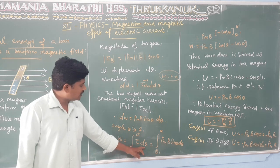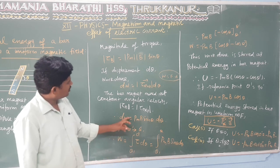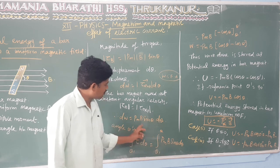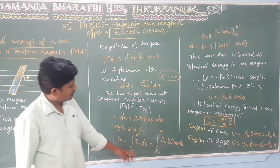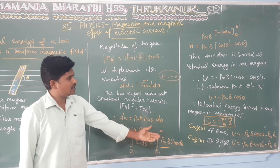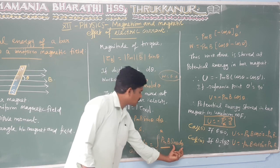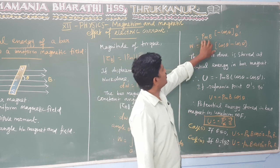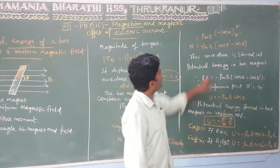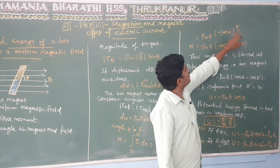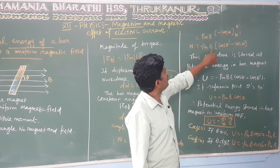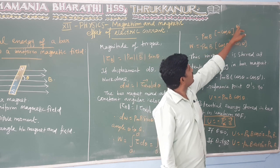We can now compute the total work done by integrating. Substituting PM·B·sin θ dθ — since PM and B are constants — we integrate sin θ dθ, which gives minus cos θ. We substitute the limits theta dash and theta, giving the result as upper limit minus lower limit.